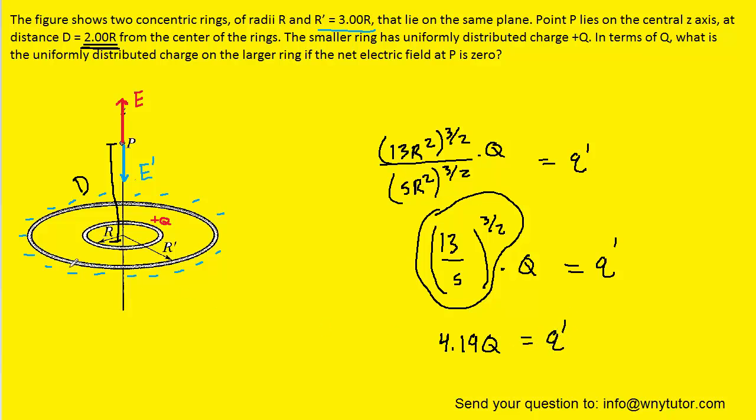Don't forget, we had concluded that the charge on the larger ring was negative, so we actually need to stick a negative sign in front of this to account for that fact. So this would be the final answer.